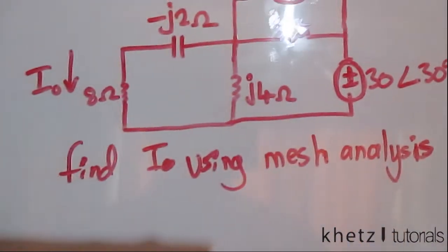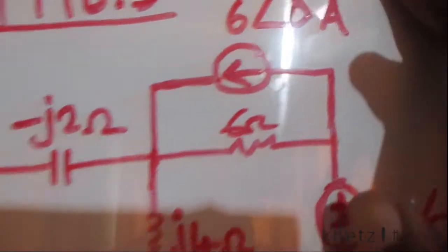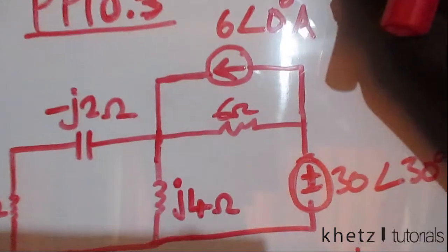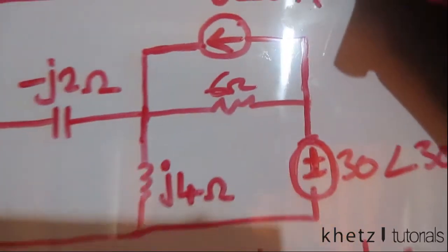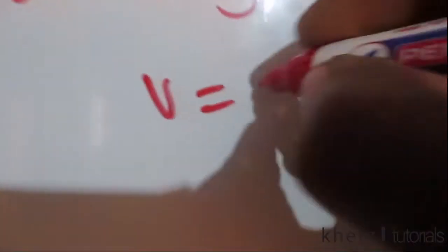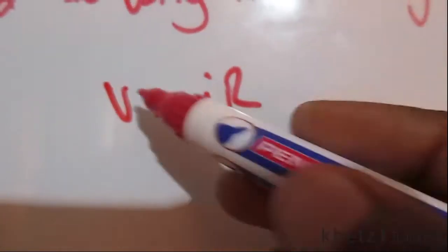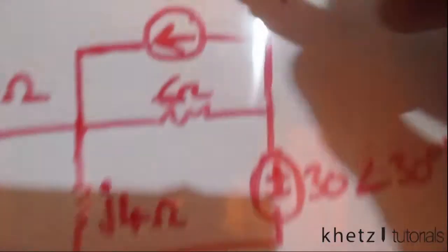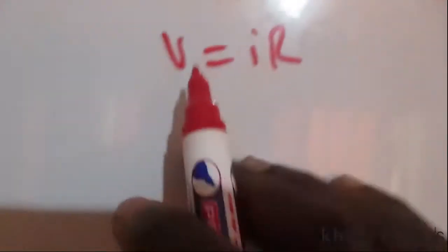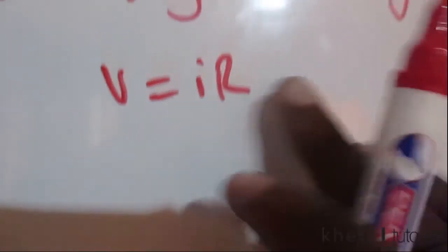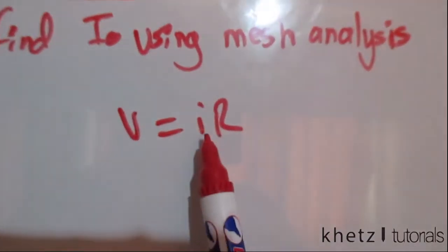The first thing I see is that we have a current source in parallel with a resistor. From chapter 4, I want to do a source transformation using Ohm's law — V equals IR. We have a current source and a resistor, so we're going to transform this configuration into a voltage source in series with that same resistor value.